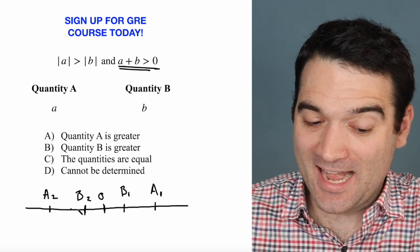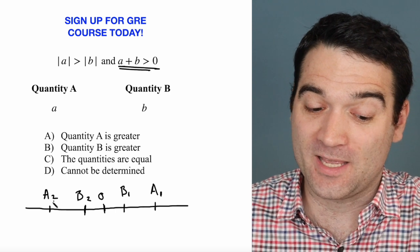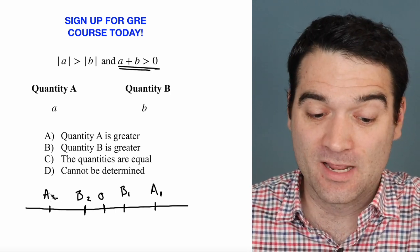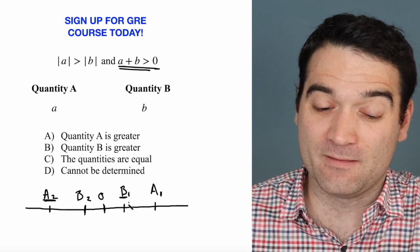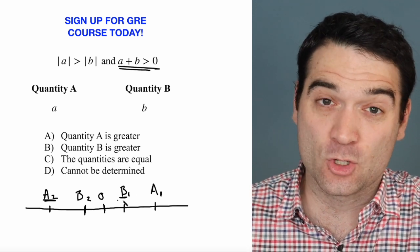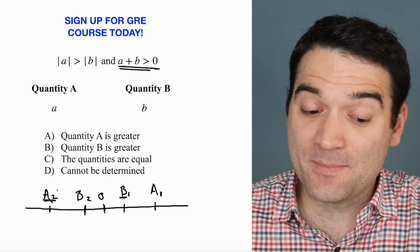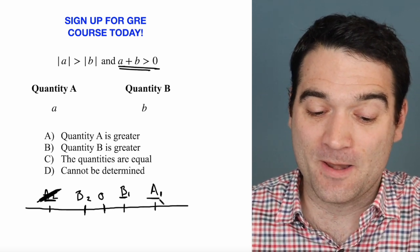what that means is that I can't have A2 and B2. I can't add these two together because that's going to give me a very negative number. And I can't have A2 and B1. I can't have a very negative number and a very positive number close to zero because that's going to create a big negative number. So that means that A2 is out. That's not a possibility. So I'm left with A1.